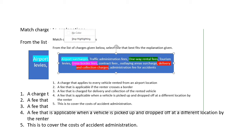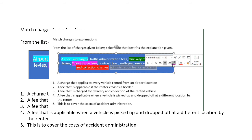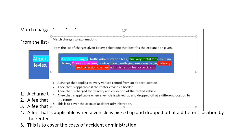Number five is to cover the cost of accident administration — that is the administration fee for accidents. So: number one is airport surcharges, number two is cross border fee, number three is delivery and collection charges, number four is one-way rental fees, and number five is administration fee for accidents.